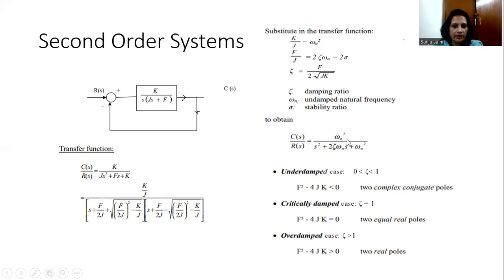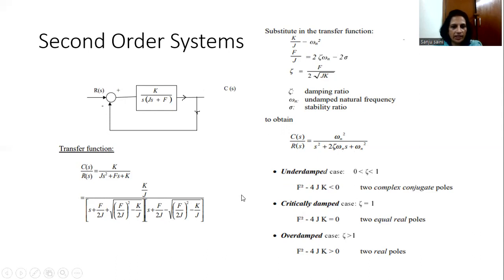Here, ωn is the undamped natural frequency, ζ is the damping ratio, and s is the frequency domain variable. For the underdamped case, the value of ζ will be varying between 0 and 1. For the critically damped case, ζ will be equal to 1, and for the overdamped case, ζ will be greater than 1. We will be considering the response of the second order system for all categories.